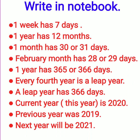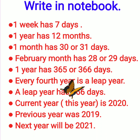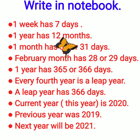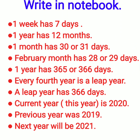Every fourth year is a leap year. Aapko pata hai jo har 4tha saal hota hai woh leap year hota hai. Ek leap year mein 366 days hote hain. Kyun? Ek din kyun badh jata hai? Kyunki har 4the saal mein jo February ka month hota hai, us mein 29 days hote hain — ek din extra hota hai.